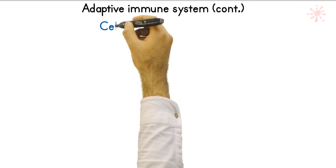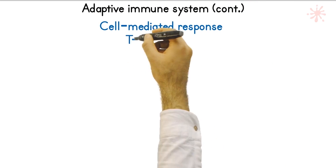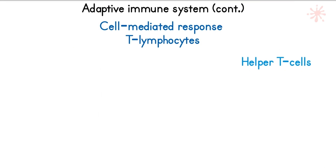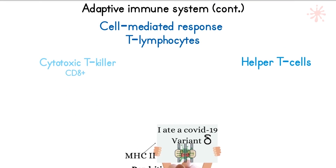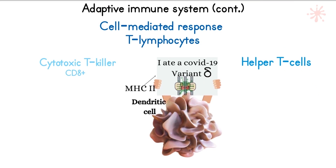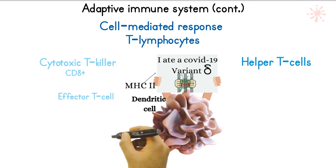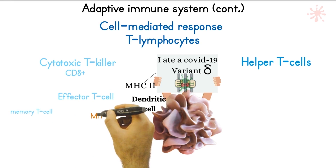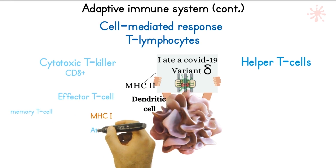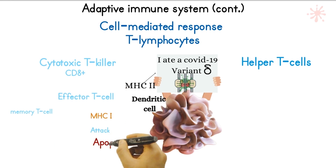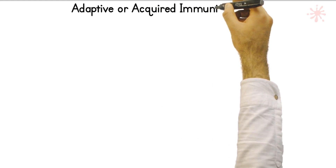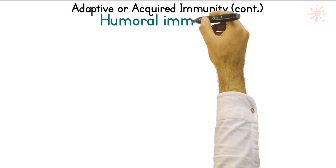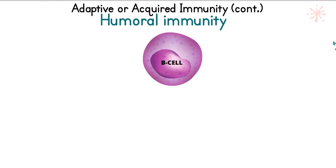The same applies to cytotoxic cells: dendritic cells carrying the proper MHC2 will activate the T killers, which give birth to effector T cells. Part of them will turn into memory cells. Effector T cells have a straightforward job — they look for cells displaying MHC1 that show altered activity and induce apoptosis to get rid of the cell and all the pathogens within it.